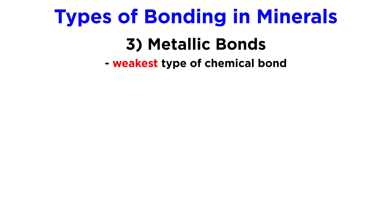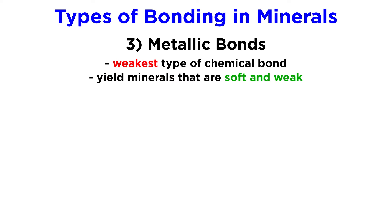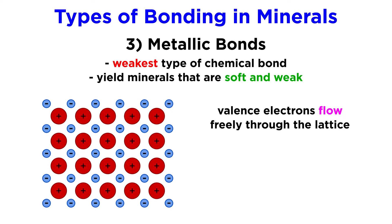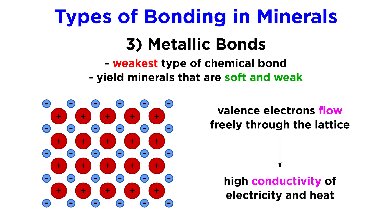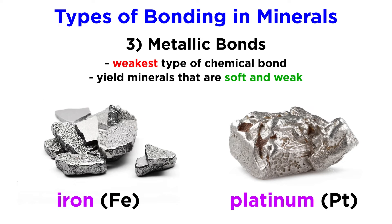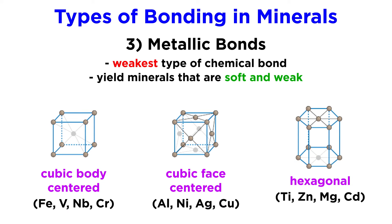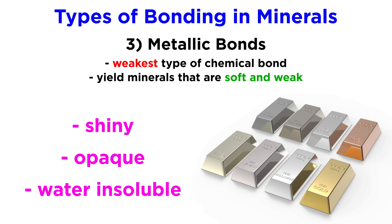Metallic bonds are the weakest type of chemical bond, making their minerals soft and weak. Due to the unique chemical properties of metallic bonds, valence electrons can flow freely throughout the entire lattice, which gives rise to the high conductivity of electricity and heat exhibited by metallic minerals. Metallic minerals can be made of a single element, like iron or platinum, or can be composed of an alloy or mixture of metals. All metals have a crystalline structure, with most being cubic. Metals are shiny, opaque, and very insoluble in water.